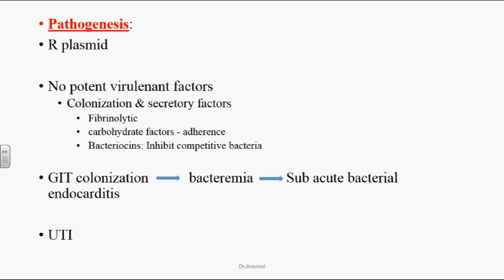Bacteriocins inhibit the growth of neighboring bacteria, allowing these organisms to grow comfortably in the GI flora. After colonization, any breach in the epithelium of the intestines, GI tract, or urinary tract allows this organism to enter the bloodstream, causing bacteremia, and ultimately can lead to subacute bacterial endocarditis. Patients with existing cardiac problems like rheumatic fever or valvular disease are more prone to subacute bacterial endocarditis.